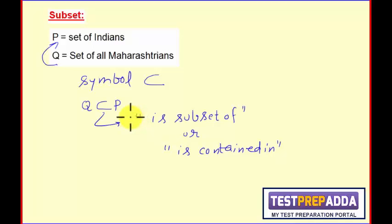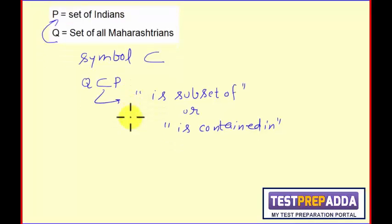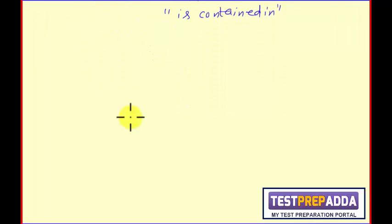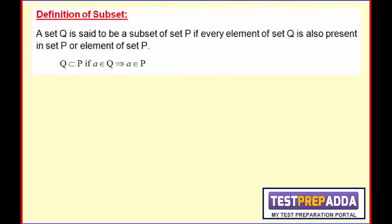Now, how to define it properly? Mathematically, how to define a subset? Definition: A set Q is said to be a subset of set P if every element of set Q is also present in set P or element of set P. For our convenience, we write this mathematical definition.